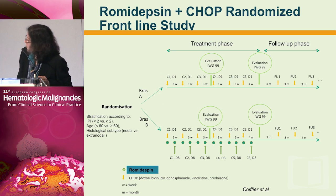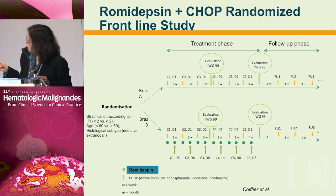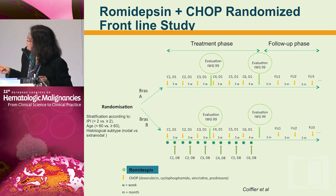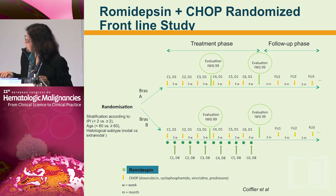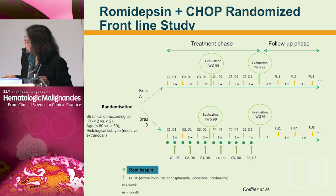Other approaches for upfront therapy include Bertrand's ongoing study incorporating romidepsin with CHOP up front. This is a randomized study — the phase two study was done safely combining these two agents, and the phase three study is ongoing, looking at whether the addition of an HDAC inhibitor upfront will be better than CHOP alone.